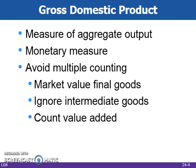To avoid multiple counting of goods, GDP includes only the market value of final goods and ignores intermediate goods, which are goods either purchased for resale or for further processing into final goods.